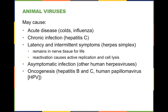Animal viruses themselves may cause acute disease. They can have chronic infections like hepatitis C, which can cause oncogenesis. You could also have asymptomatic infections like human herpes viruses — they infect your nervous system, tend to stay out of the way until you're stressed, but they're highly infectious.